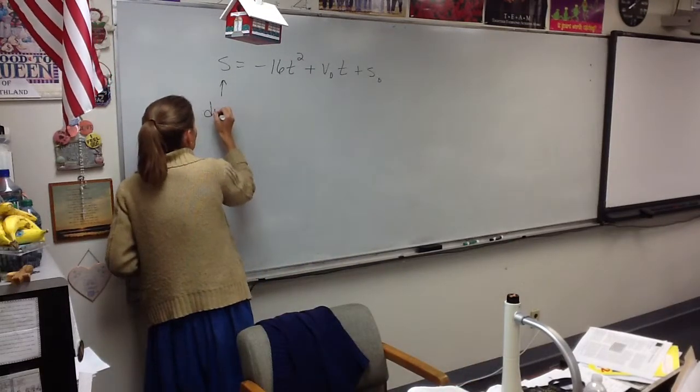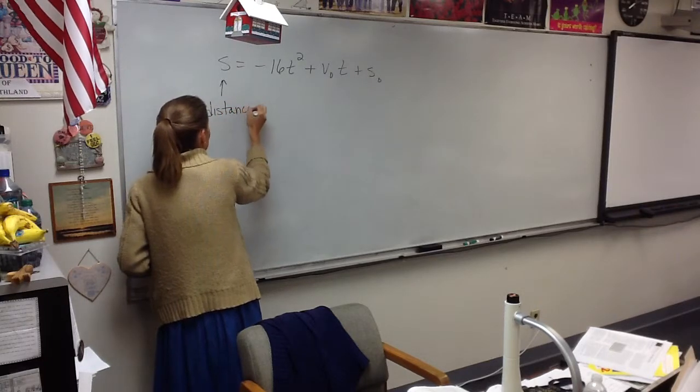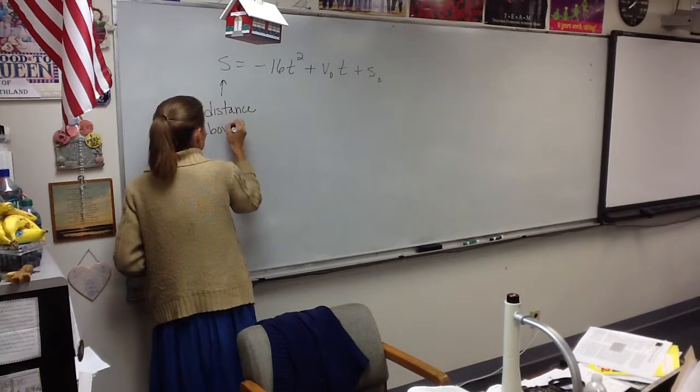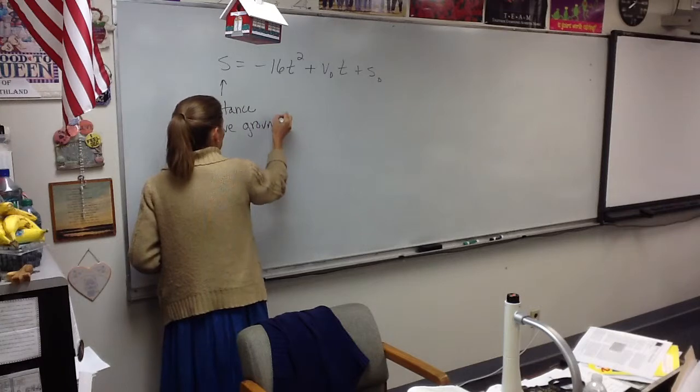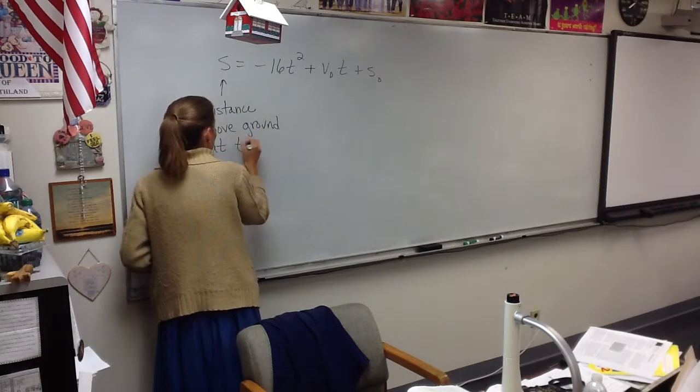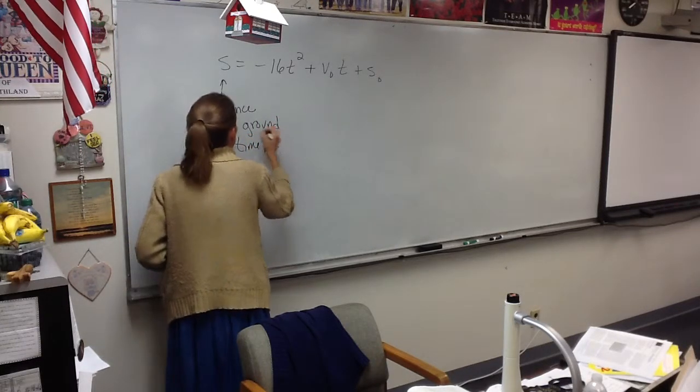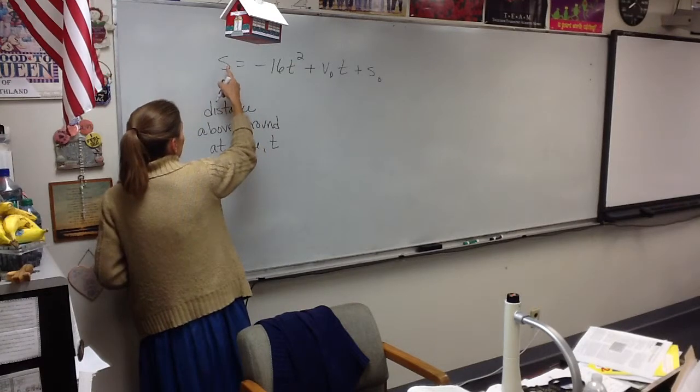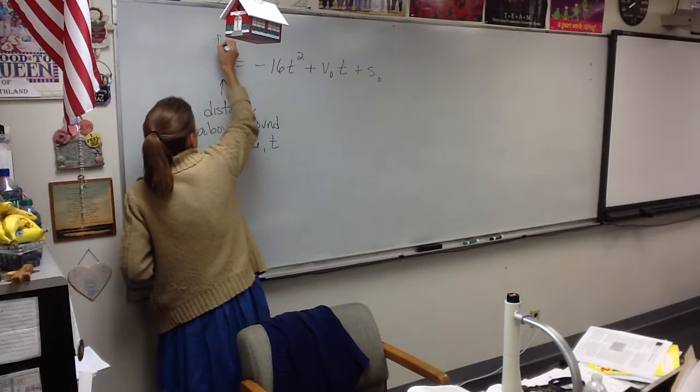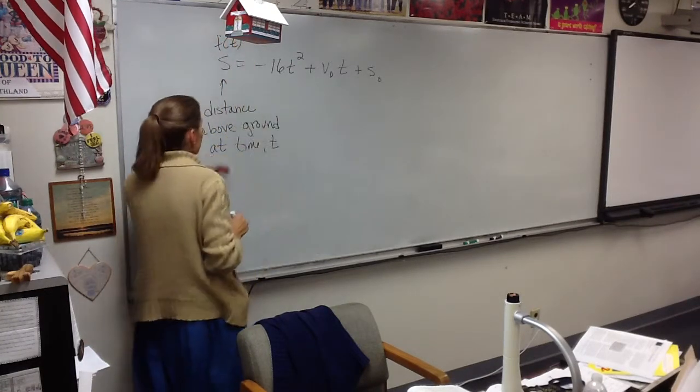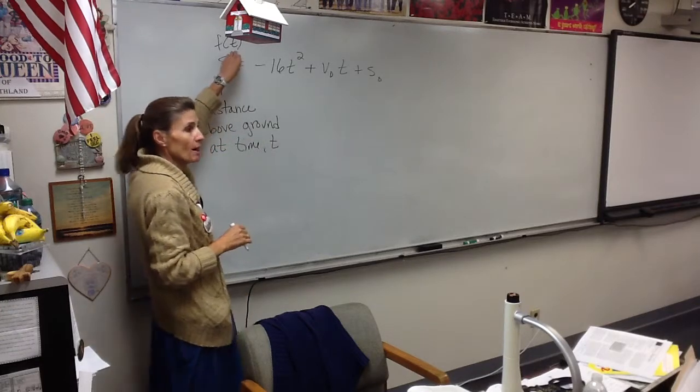S is the distance above the ground at time t. So a lot of times, instead of S here, they'll have F of t, because the distance is a function of the time.